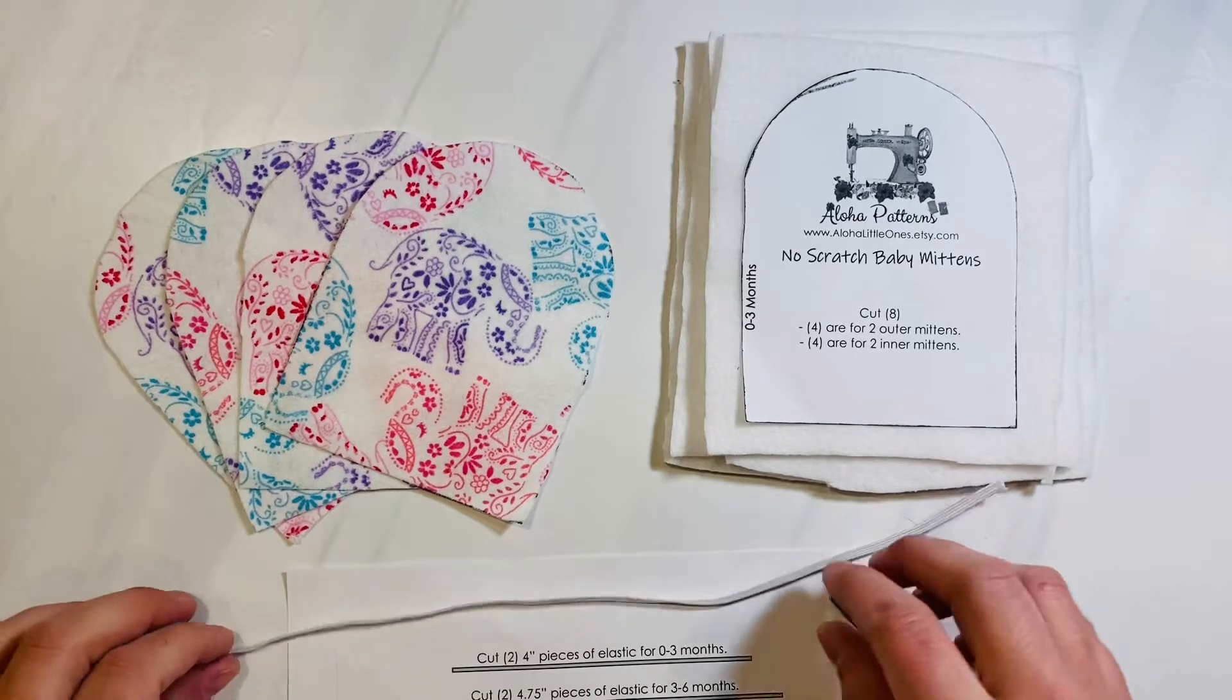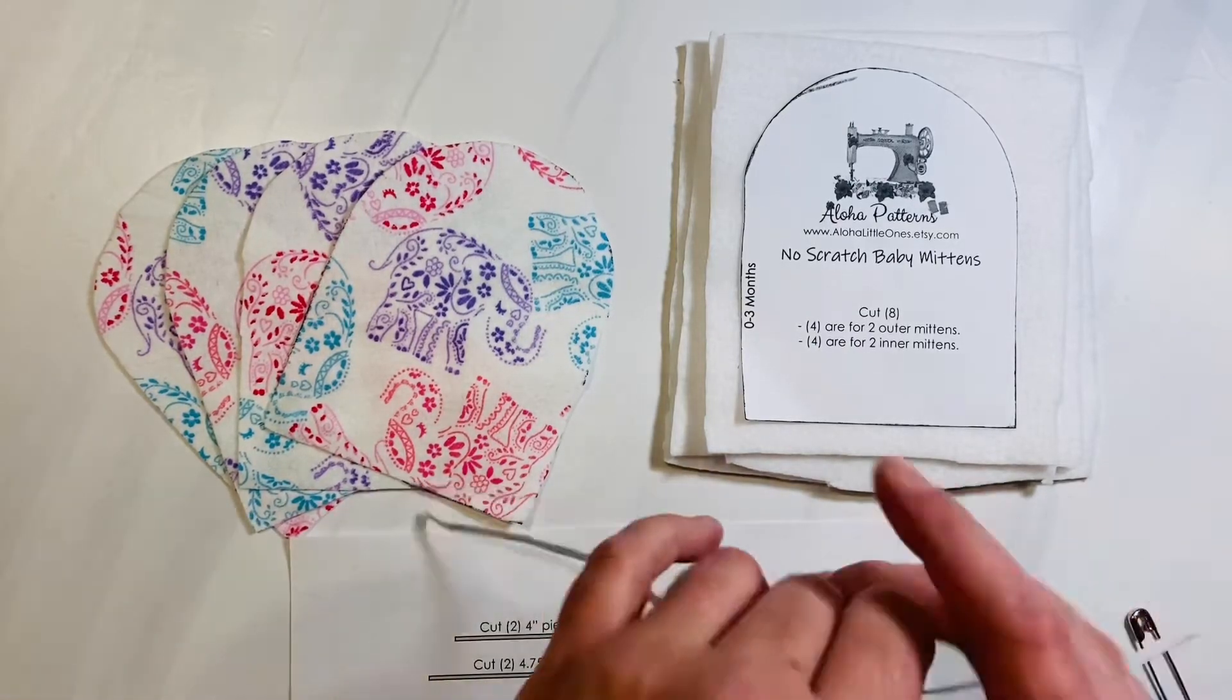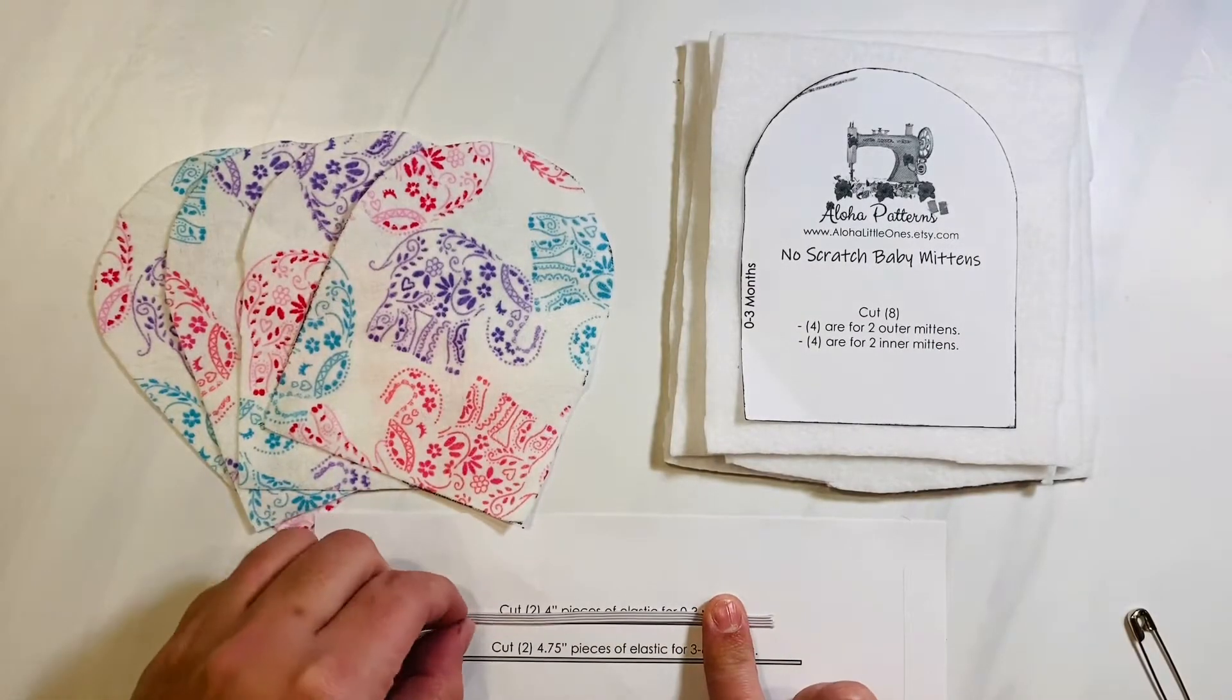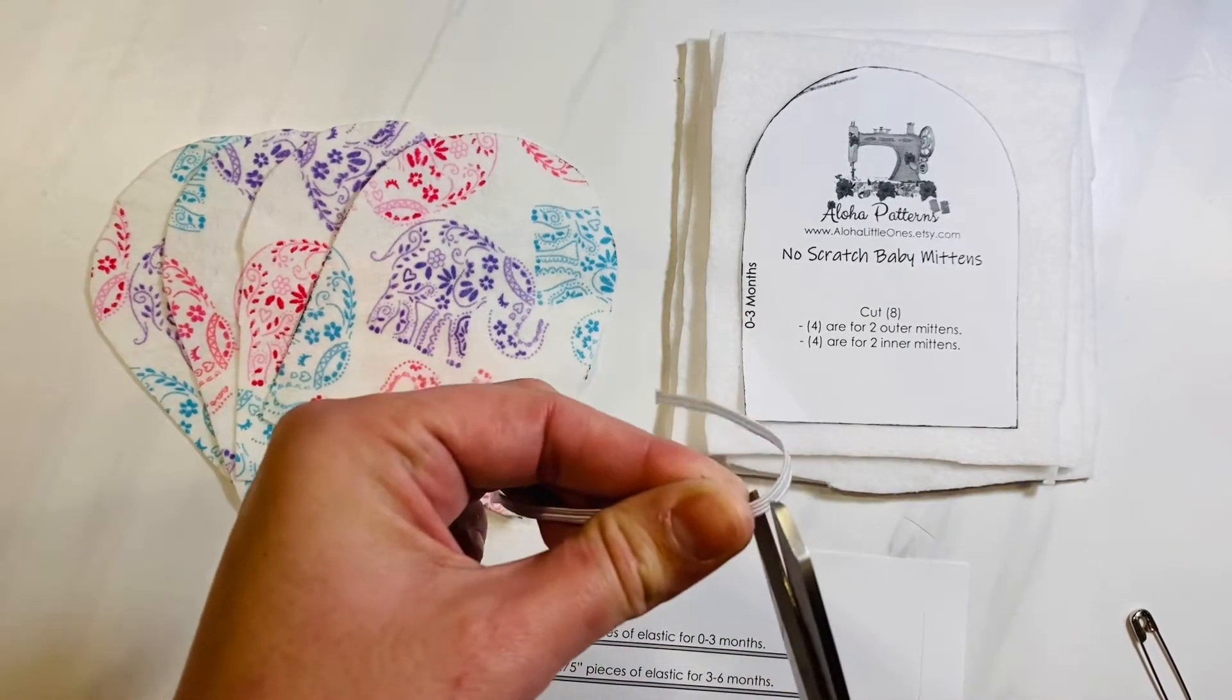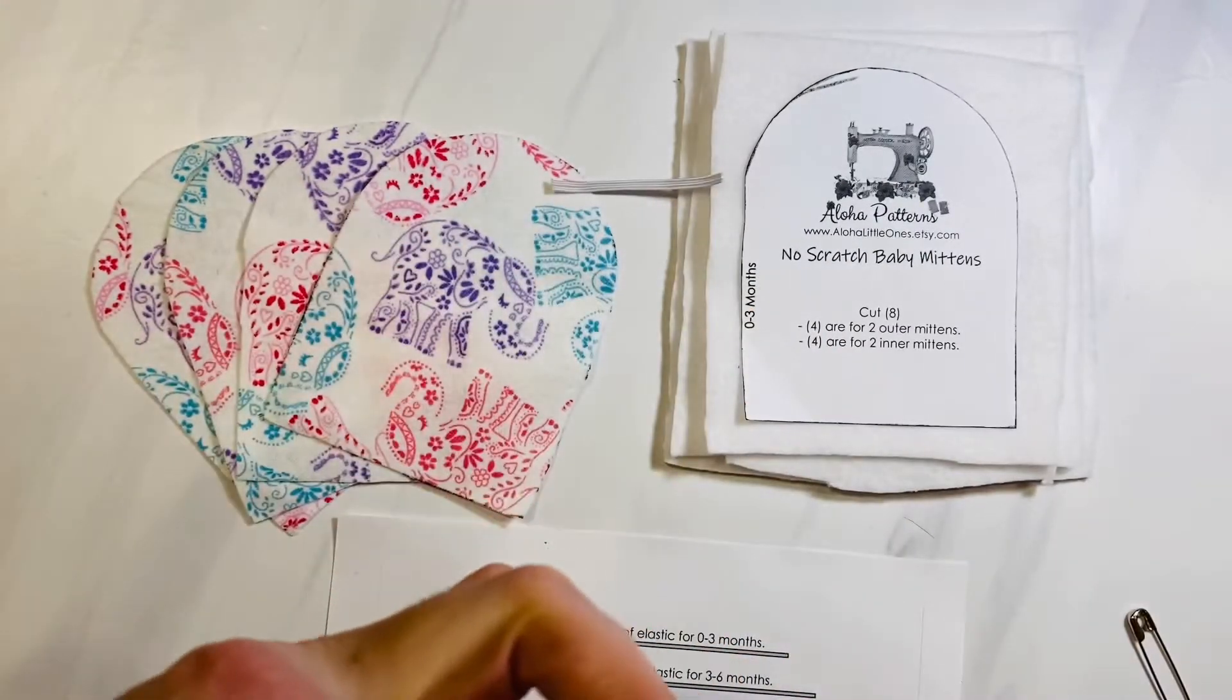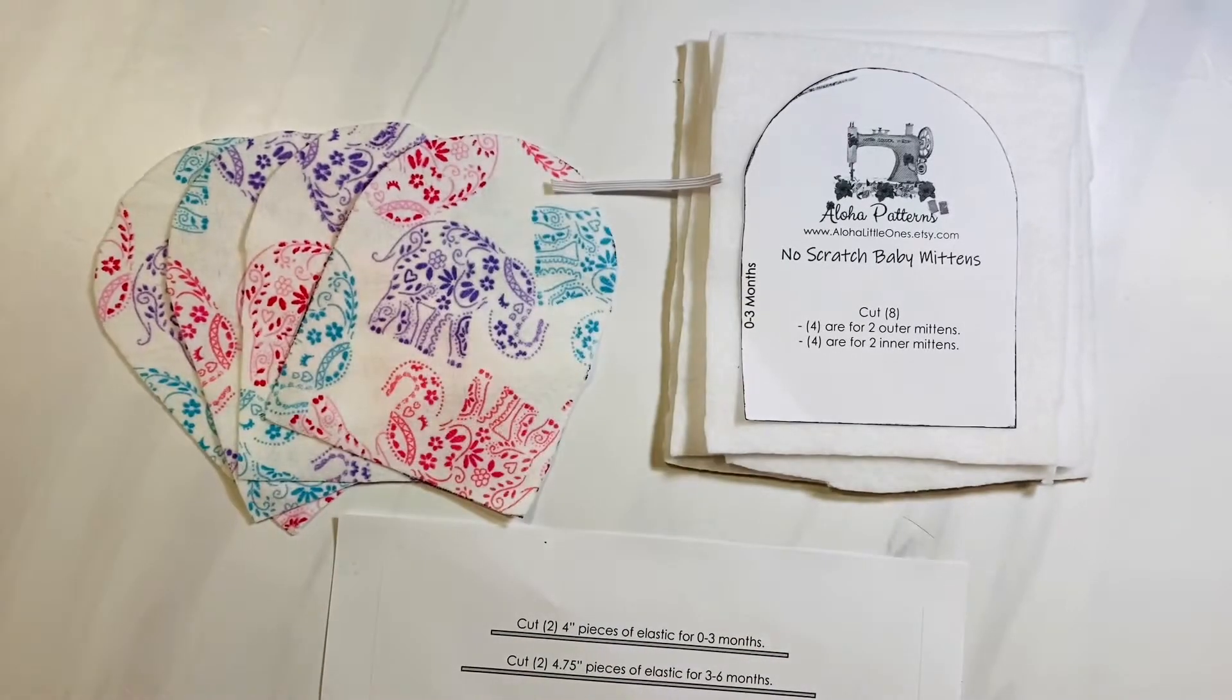Here are my supplies. I'm going to be making this for a zero to three month size, and they fit newborn size quite nicely. For your elastic, I suggest using one-eighth inch elastic. It doesn't matter the color because it's going to be hidden on the inside. On the pattern piece I've included the measurement, so you just line up your elastic with the measurement on the pattern piece according to the size you're making and cut them out. You're going to need two, one for each mitten, and you're also going to need two safety pins.